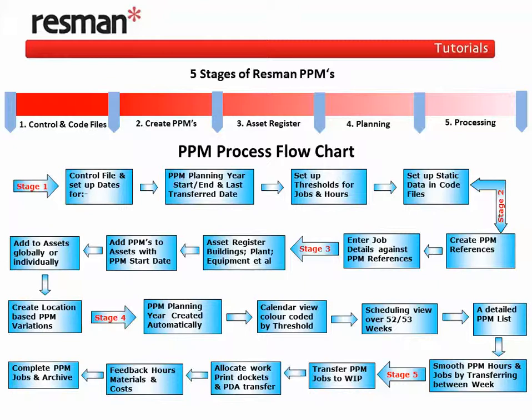This is a flowchart of the entire PPM process. You will notice how we also have a progress bar at the top of the slide, highlighting the five stages to achieve a successful PPM planning year. As we move through the stages, the progress bar will colour green to highlight our progress.